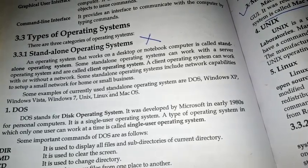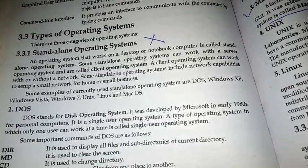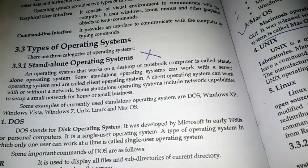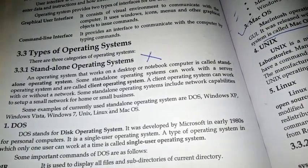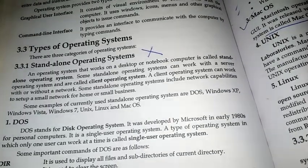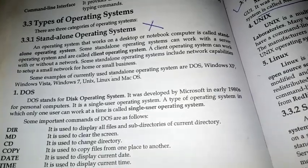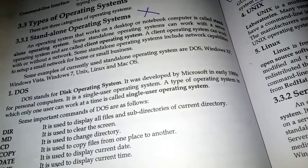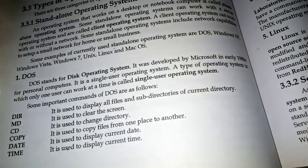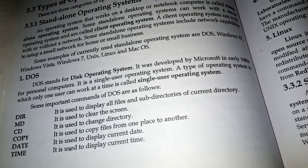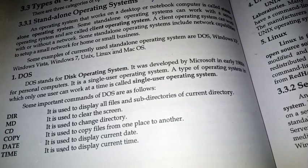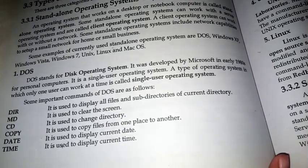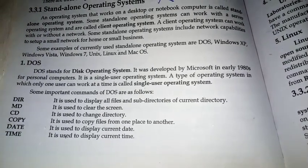Some standalone operating systems include network capabilities to set up a small network for home or small office activities. Some examples of currently used standalone operating systems are DOS, which stands for Disk Operating System. It was developed by Microsoft in the early 1980s for personal use.